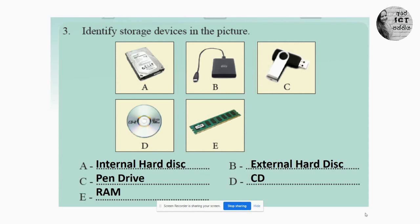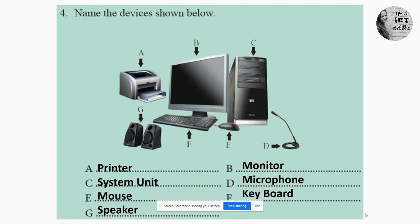Let's move to the fourth question: name the devices shown below. Letter A is a printer. Letter B is a monitor. Letter C is a system unit. Letter D is a microphone. Letter E is a mouse. Letter F is a keyboard. Letter G is a speaker.